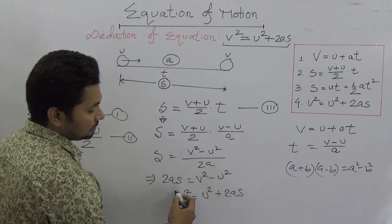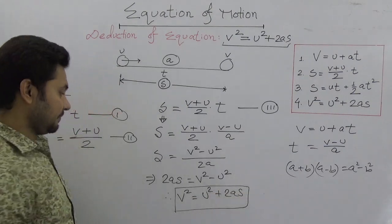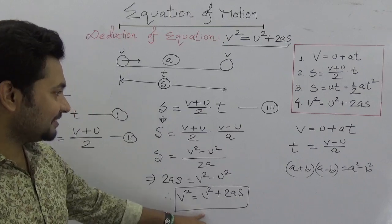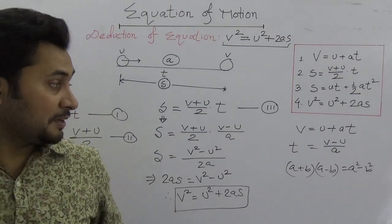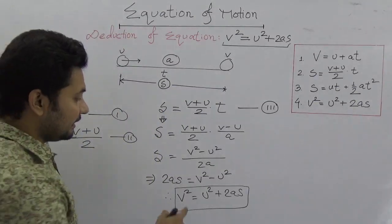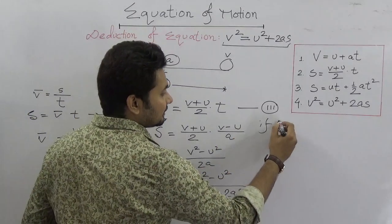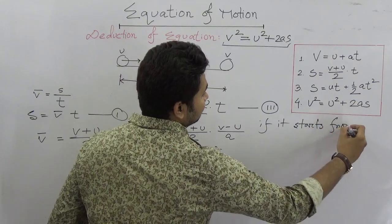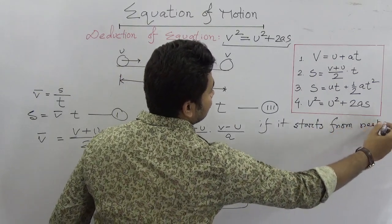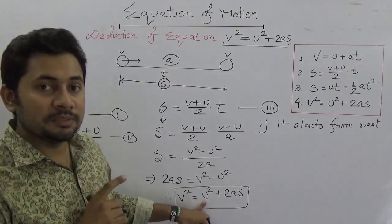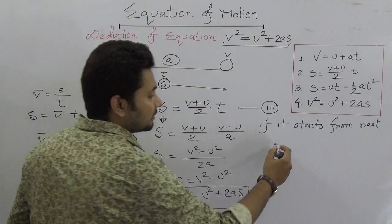In special cases, what would be the solution? If it starts from rest, then we can say that u = 0. Here, v² would be 2as.